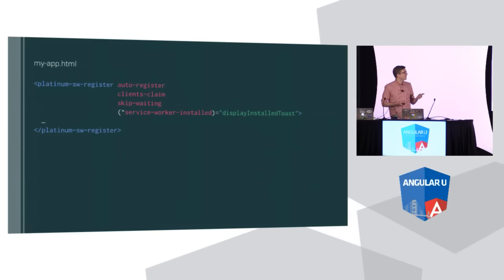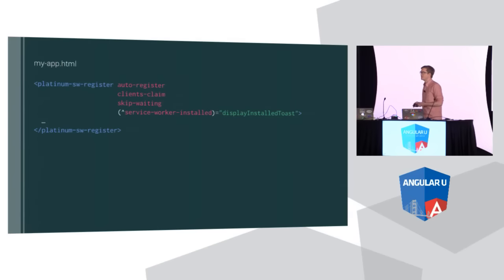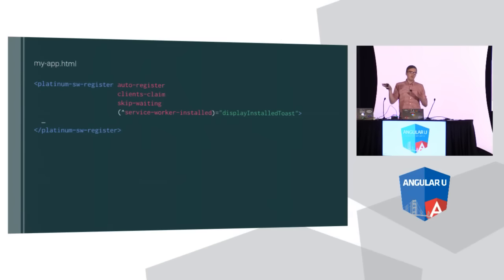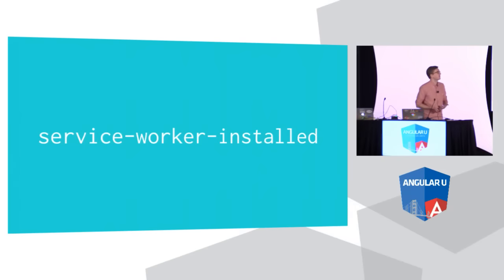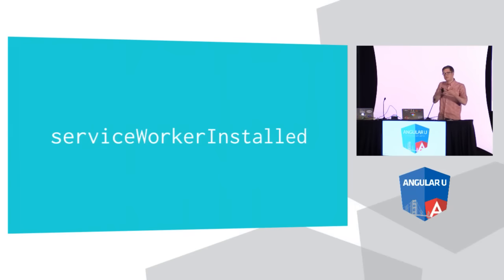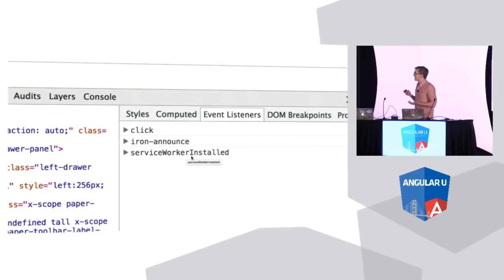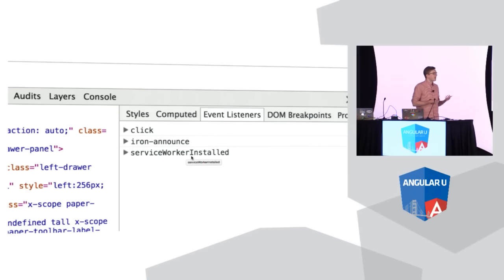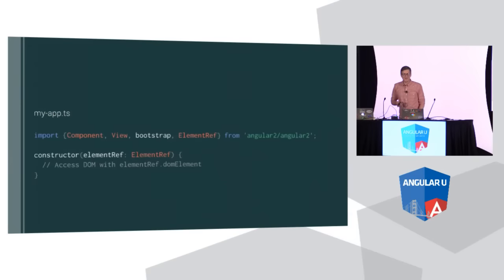We can use that event to display a little toast notification to let the user know the app is available offline. Originally I thought I had enough from the Angular Getting Started Guide to add an event listener in Angular 2. But what I found was that if I use a dash-cased event name like that, currently in Angular 2, dash-cased events get converted to camel-cased. I found in the dev tools that it converted the event name to ServiceWorkerInstalled, which is actually not the event that it fires. Someone next to me said just use addEventListener.